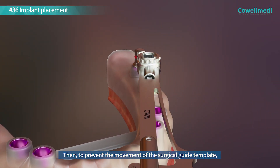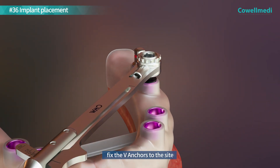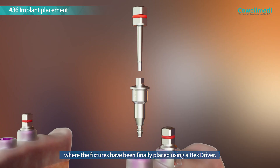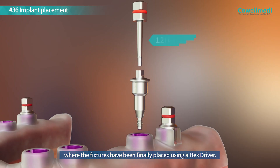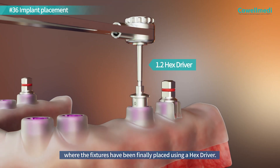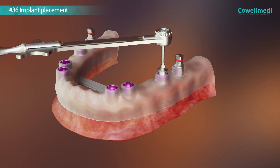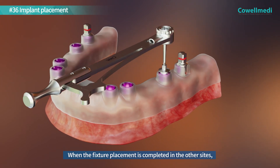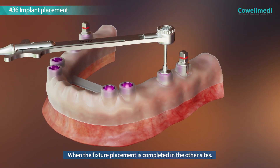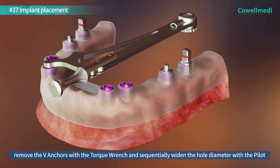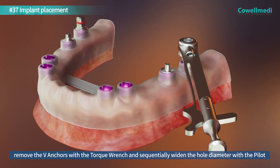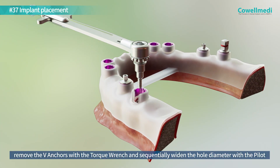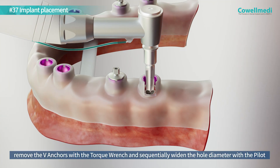To prevent movement of the surgical guide template, fix the V-anchors to the site where the fixtures have been finally placed using a hex driver. When fixture placement is completed at the other sites, remove the V-anchors with the torque wrench and sequentially widen the hole diameter with the pilot drills.